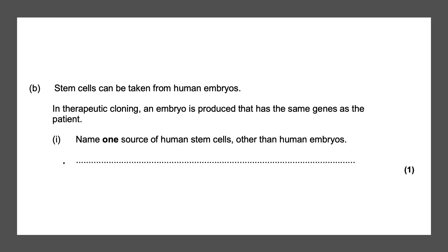Stem cells can be taken from human embryos. In therapeutic cloning, an embryo is produced that has the same genes as the patient. Name one source of human stem cells other than human embryos — remember they can come from adult bone marrow, and that gives you your one mark.